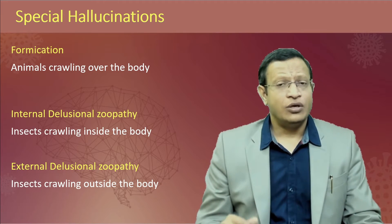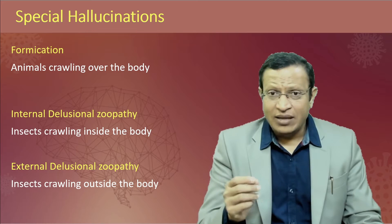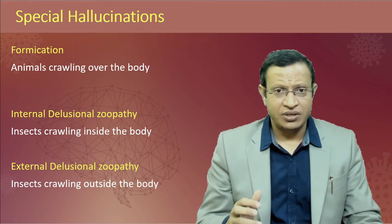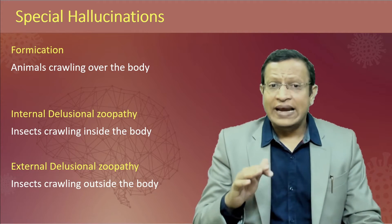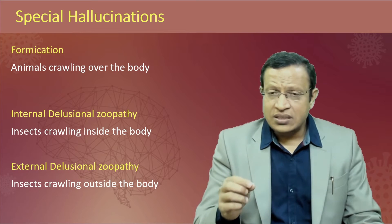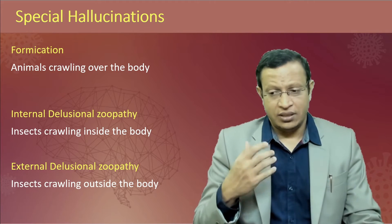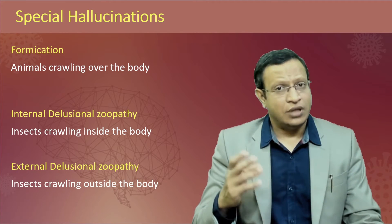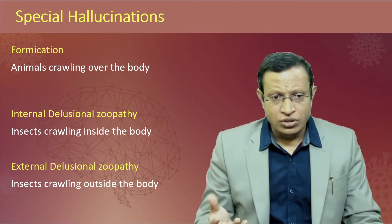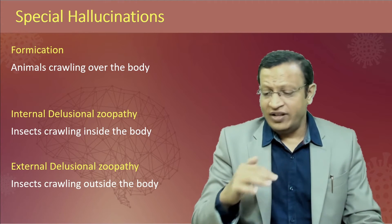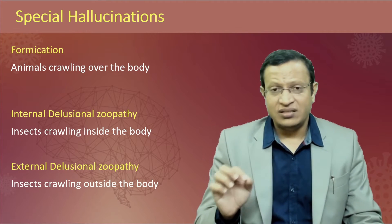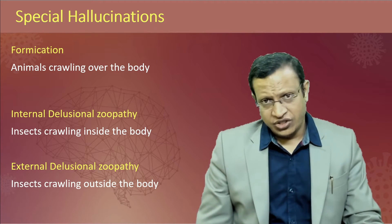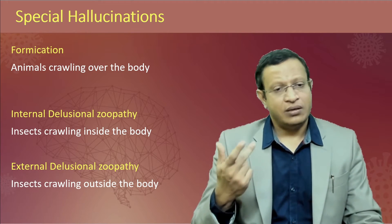Formication is common in cocaine users and is also called cocaine bugs — the feeling of animals or insects crawling all over the body. Internal delusional zoopathy: insects are crawling inside the body; the patient feels that inside the skin, worms are moving around. External delusional zoopathy: insects crawling outside the body — above the skin they are felt but cannot be seen; they are very minute. These are all special hallucinations: formication, internal delusional zoopathy, and external delusional zoopathy.